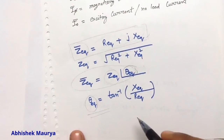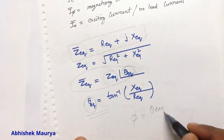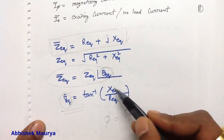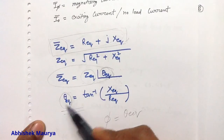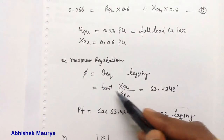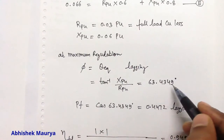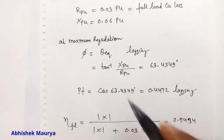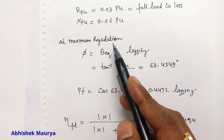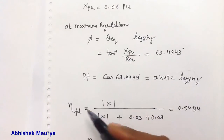The important point is theta_equivalent, because at maximum regulation the power factor angle phi will be equal to theta_equivalent. We know the values of X per unit and R per unit, so we put them in this equation to get theta_equivalent. The value of phi equals tan inverse of X per unit divided by R per unit, which gives 63.4349 degrees. The power factor cos(phi) will be 0.4472 lagging. Maximum regulation always occurs at lagging power factor.